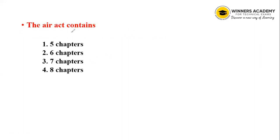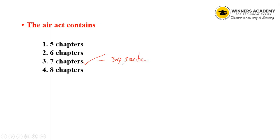Next question: The Air Act contains how many chapters and sections? Options are 5, 6, 7, and 8 chapters. The answer is 7 chapters and 54 sections. Air Act is from 1981.